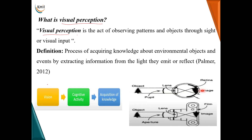Visual perception has three steps involved. The first step is capturing of image, which is vision. The second step is some cognitive activity happening with that captured image. The third step is acquisition of knowledge — that is, extracting semantic information from the captured image. There is also an analogy between capturing of an image by a human and by a camera, which can be understood from the figure shown.